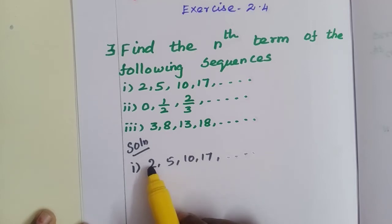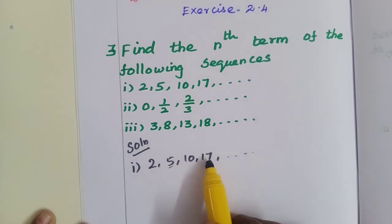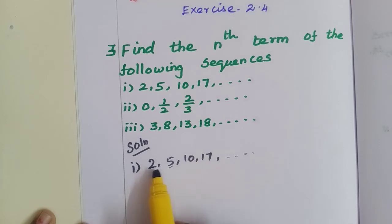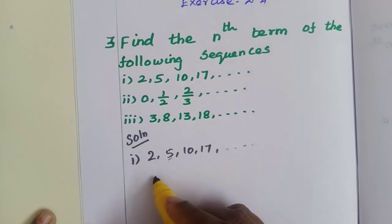First place is 1 squared, or 1 plus 1 is 2. 4 plus 1 is 5, 9 plus 1 is 10, 16 plus 1 is 17. 1 squared, 4 is 2 squared, 9 is 3 squared, 16 is 4 squared. So nth term is equal to...